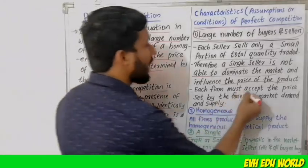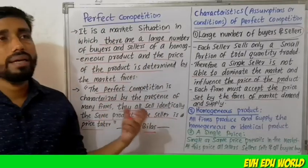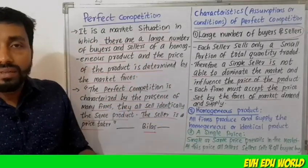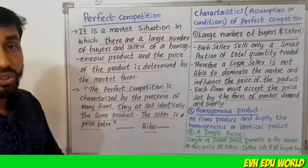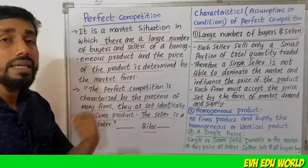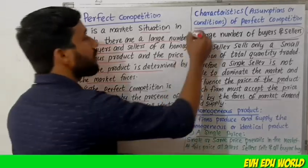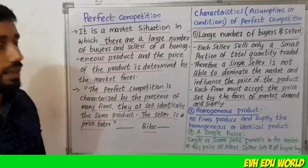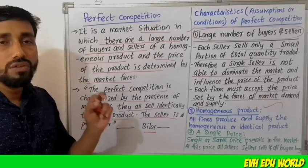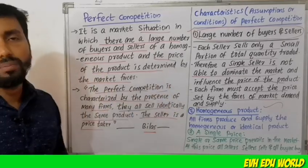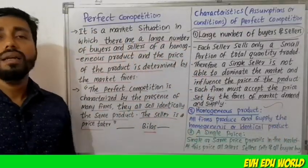Each firm must accept the price set by the forces of market demand and supply. This is the first feature: large number of buyers and sellers. The second feature is homogeneous product — all firms produce and supply a homogeneous or identical product.